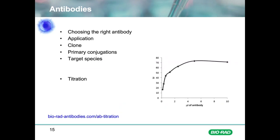The next important step is to choose your antibody. Unfortunately, not all antibodies work in all applications. Some clones are flow-specific, some bind to different portions of a marker which can lead to very different protocols — for example, if it targets an intracellular rather than extracellular epitope. Some clones are preferred for specific applications, and the type of conjugation can be application-specific. The host species and isotype may be important, especially if you are using secondary antibodies or isotype controls. This information can be found on our website and data sheets.